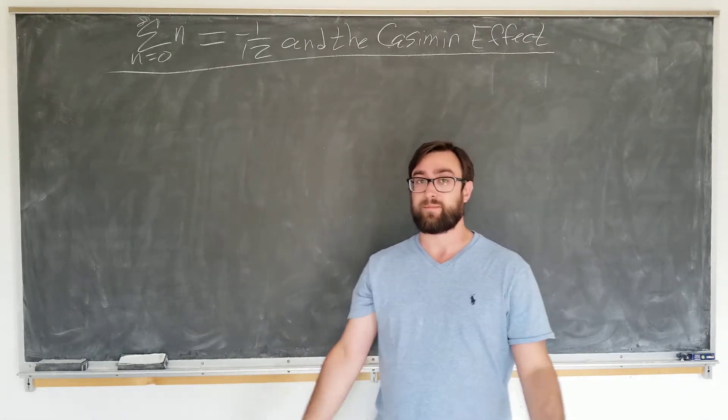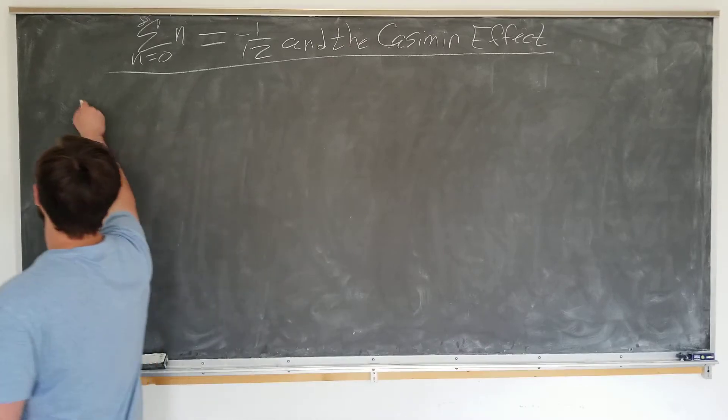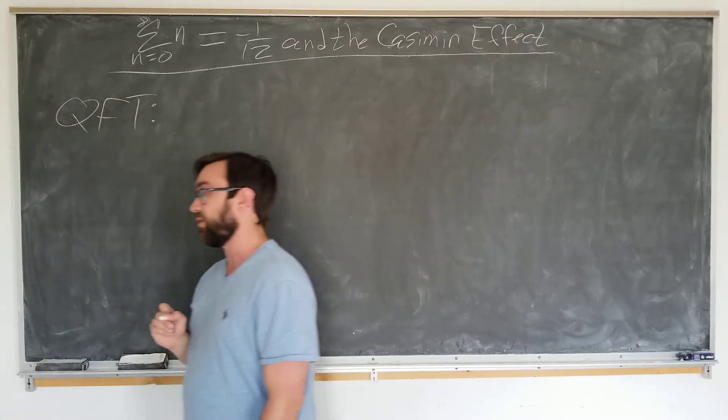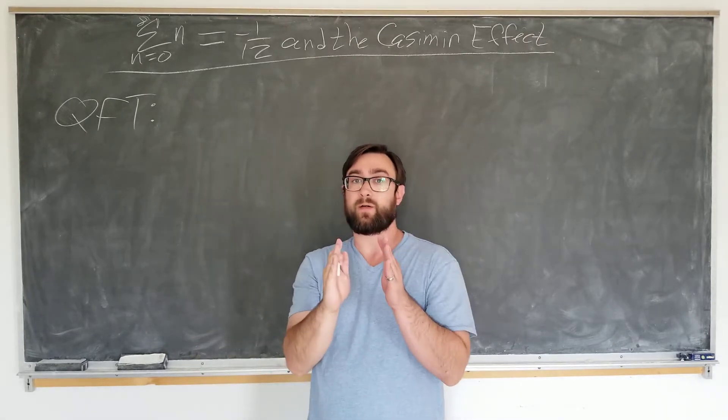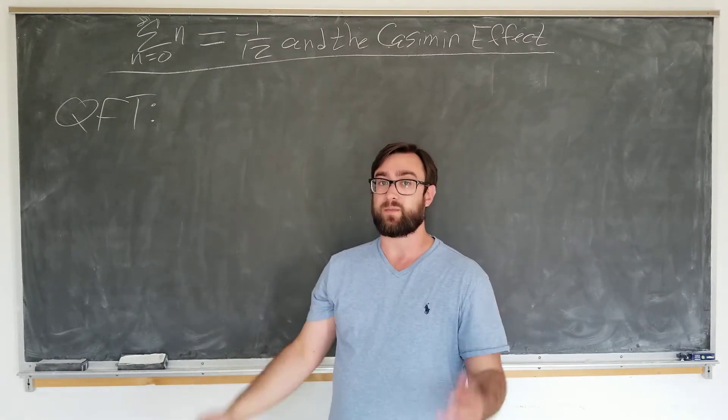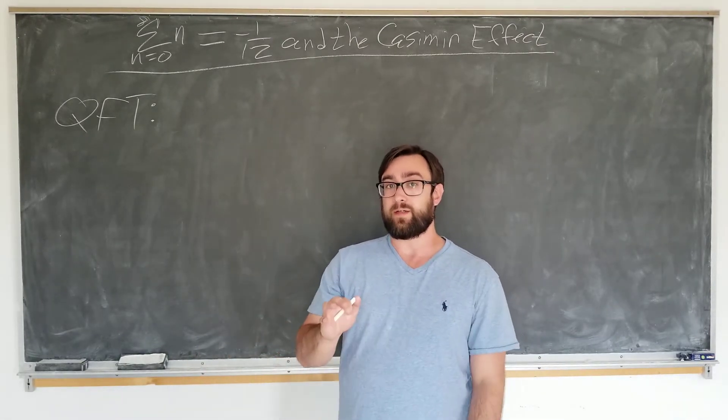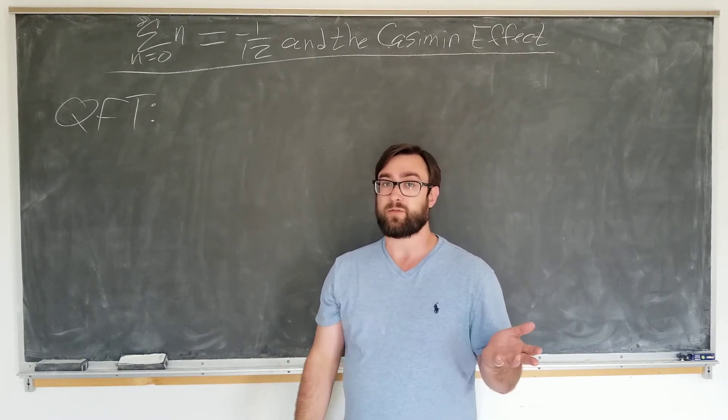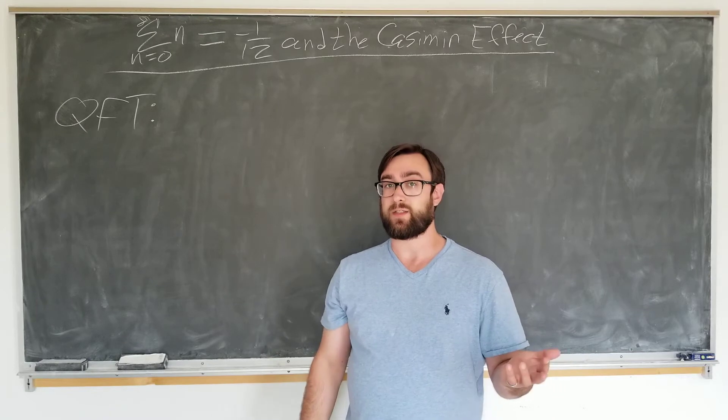Let's start with a statement. In quantum field theory, or QFT, one of the most basic predictions is that when you have two parallel metal plates separated by a small distance, even if the plates are uncharged, there's still a small repulsive force between them, known as the Casimir effect.